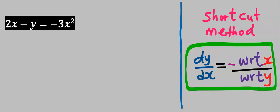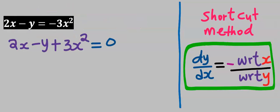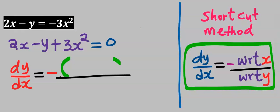To apply the shortcut method, the first thing is to rearrange the given question. It must be equal to zero. Next, apply the shortcut method. At the numerator, we are going to respect only x. Let's differentiate 2x.